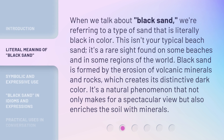When we talk about black sand, we're referring to a type of sand that is literally black in color. This isn't your typical beach sand — it's a rare sight found on some beaches and in some regions of the world. Black sand is formed by the erosion of volcanic minerals and rocks, which creates its distinctive dark color. It's a natural phenomenon that not only makes for a spectacular view but also enriches the soil with minerals.